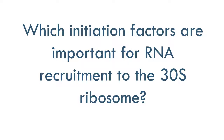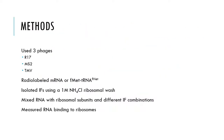Waba and his colleagues wanted to figure out which of these initiation factors was most important for binding to the 30S ribosome. They did this by taking radiolabeled mRNA or FMET from three different phages and mixing the RNA with ribosomal subunits in different combinations of the initiation factors. The scientists were able to easily isolate the initiation factors from E. coli by washing the ribosomes with a one molar ammonium chloride ribosomal wash. They then measured the amount of RNA binding to the ribosome subunit, incubating the ribosome-initiation factor mixture for 15 minutes before measuring radioactivity.